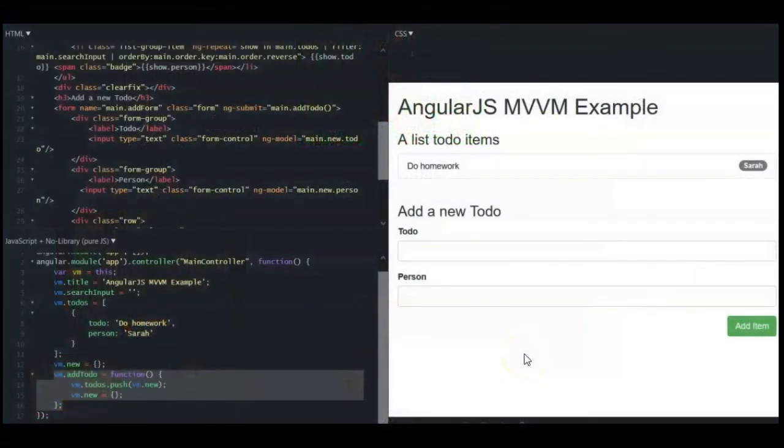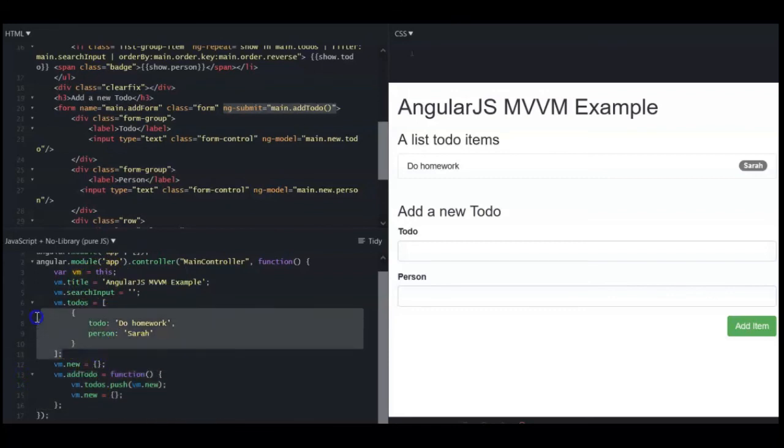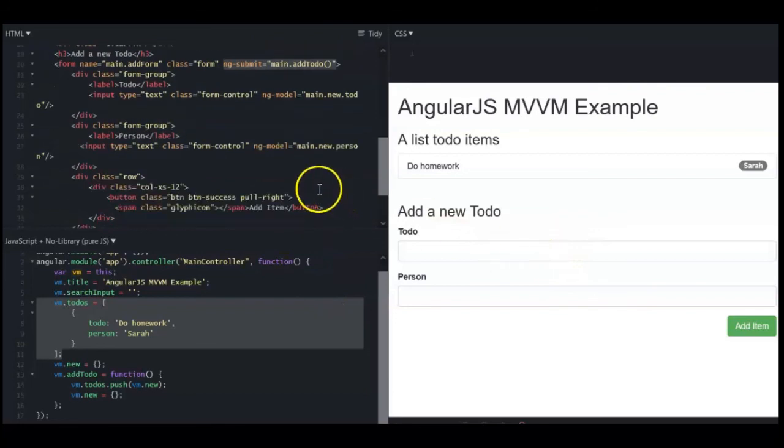Here's a simple example of MVVM written in Angular, a popular JavaScript library for client-side applications. This small app records a list of items to do. The HTML is the view. There are bindings here to the form so that when it is submitted, Angular calls the addToDo method, which is located in the view model, which is just a function. The view model contains a list of to-dos, which is a simple array of objects. So when addToDo is called, it adds a new to-do object in the list. Again, just a simple example of MVVM.